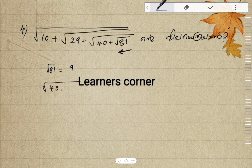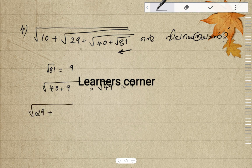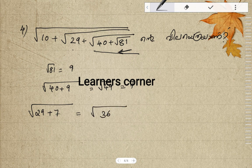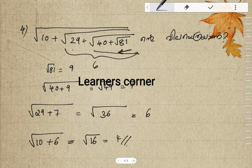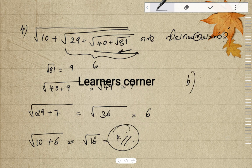Start from inside. Root of 81 is 9. Then root of 40 plus 9 equals root of 49, which is 7. Then root of 29 plus 7 equals root of 36, which is 6. Finally, root of 10 plus 6 equals root of 16, which is 4. Option B is the correct answer.